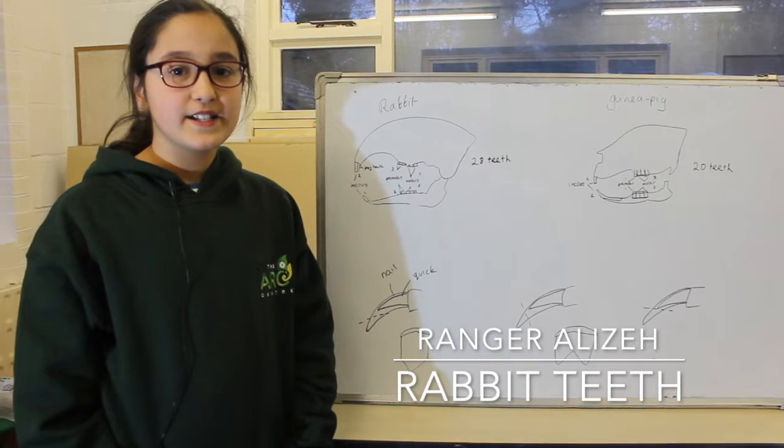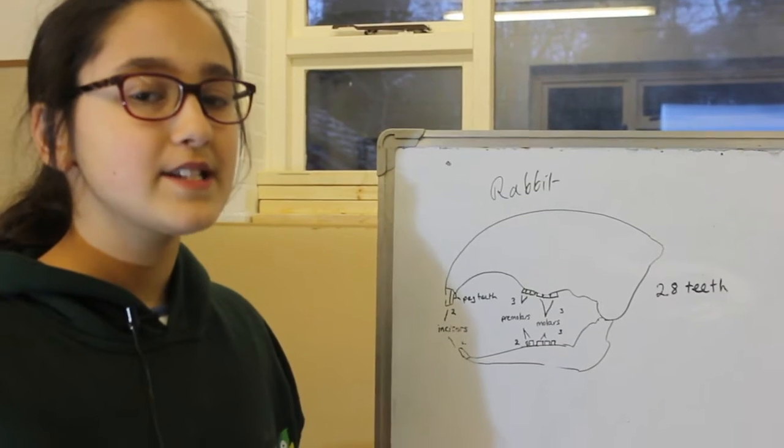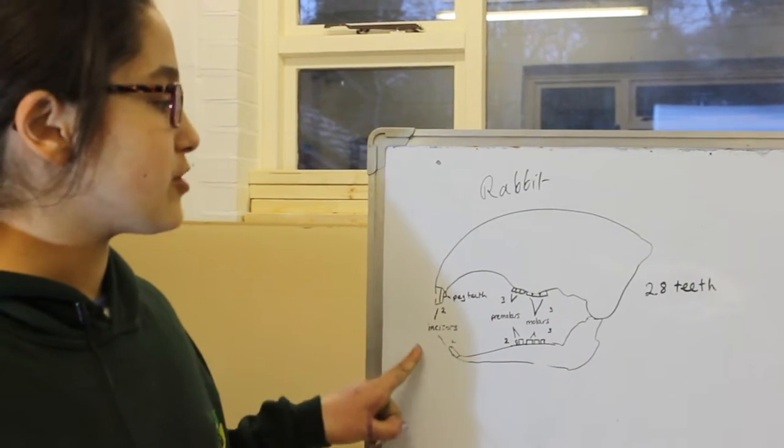Even though rabbits aren't rodents, their teeth are continuously growing. Rabbits have two front teeth on the top and on the bottom.